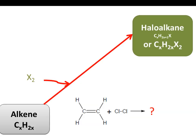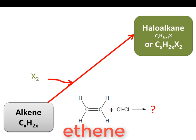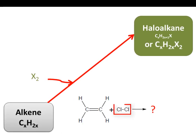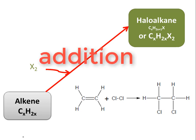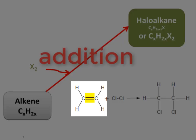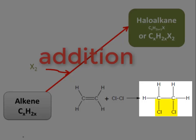For example, ethene reacting with Cl₂ produces 1,2-dichloroethane. This is an addition reaction — the chlorine is incorporated into the alkene, and the alkene's double bond is traded for two single bonds, each with a halogen atom.